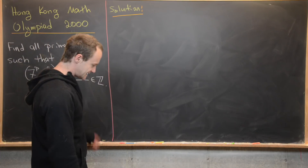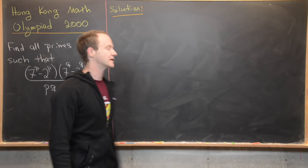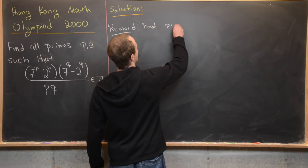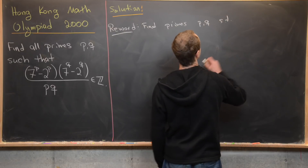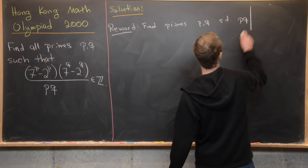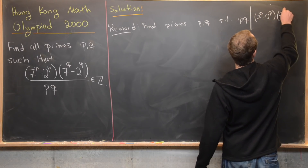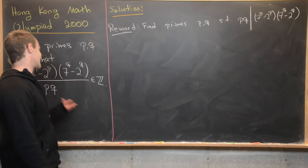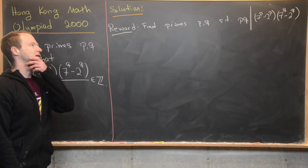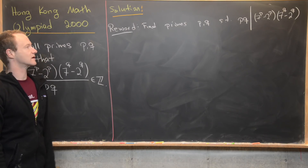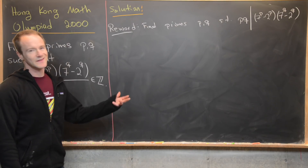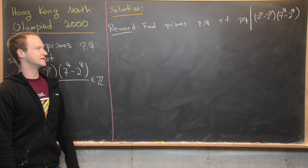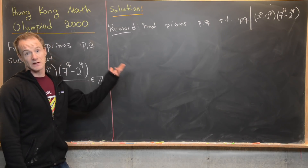Now we're ready to look at our solution. Like the first hint said, we want to reword this as a divisibility question: find primes P and Q such that P times Q divides (7^P - 2^P)(7^Q - 2^Q). Since P and Q are primes, P must divide either 7^P - 2^P or 7^Q - 2^Q. Let's do that case by case.